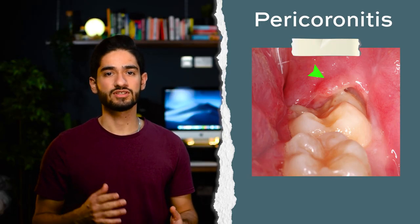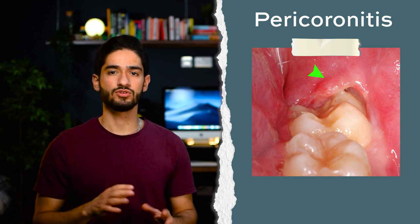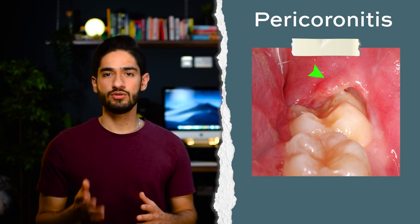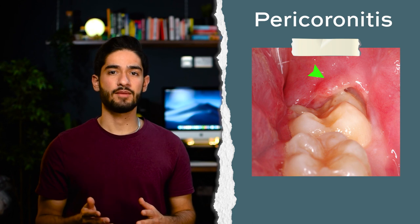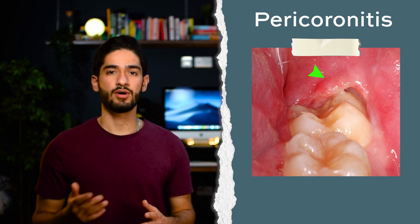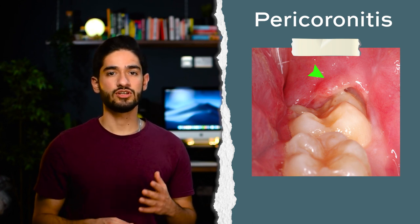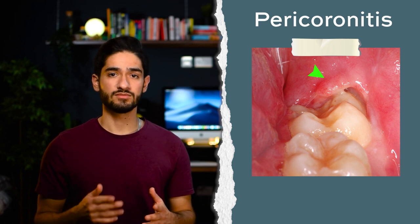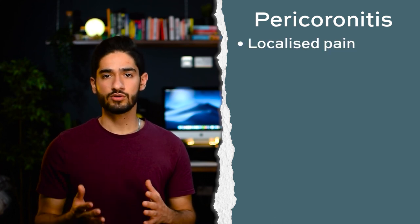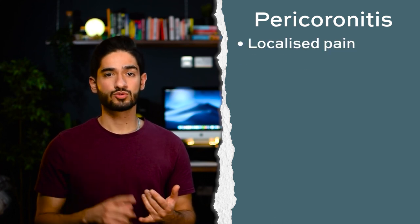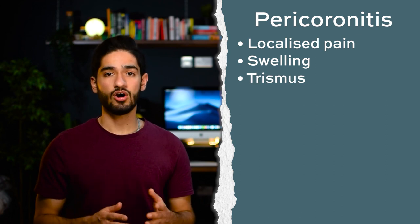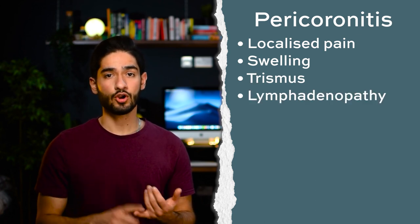Second to last is pericoronitis, which is the inflammation of the operculum, the soft tissue surrounding an impacted tooth. You'll pretty much only see this on the eights, but it can technically happen to any other partially erupted tooth. The patients are usually between 17 and 24, since this is when the wisdom teeth are erupting, and they present with localized pain, swelling and difficulty opening their mouth.